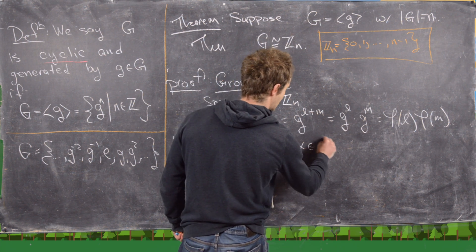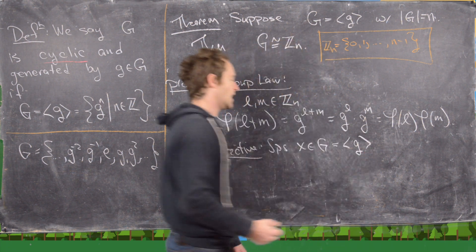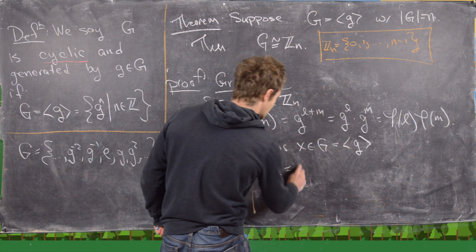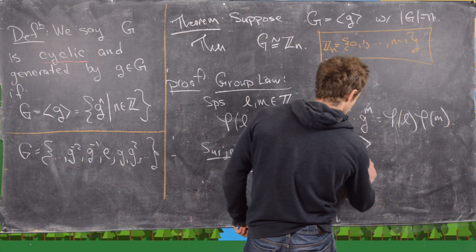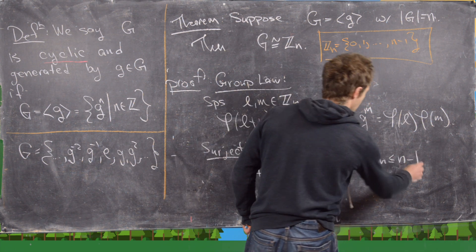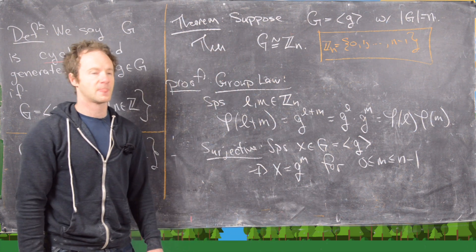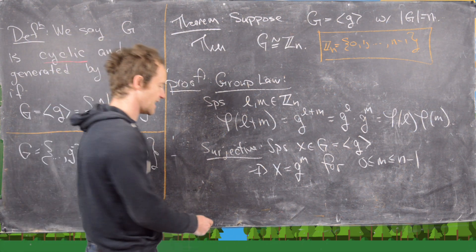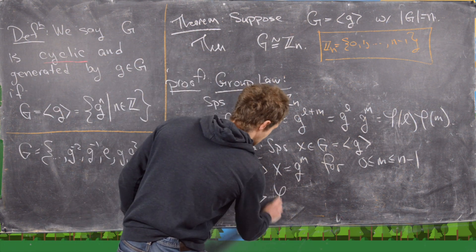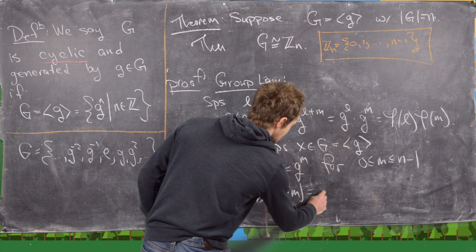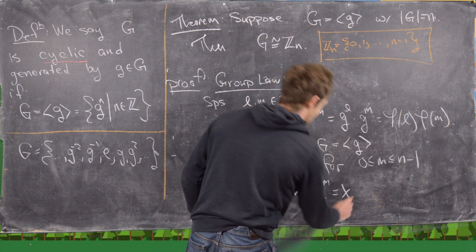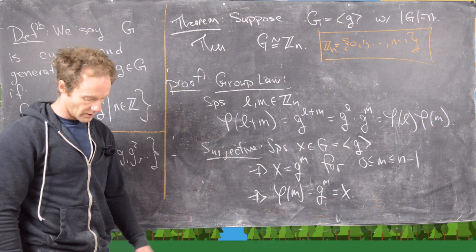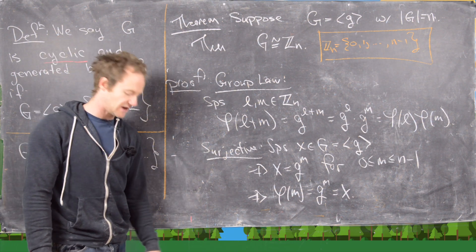Now let's check surjectivity. Suppose x is an element of G, which equals the cyclic group generated by little g. That tells us x = gᵐ for some m between 0 and n−1 — since the order of G is n, those are the only values of m we need. Then φ(m) = gᵐ = x, so we've found a preimage for our element from the group.